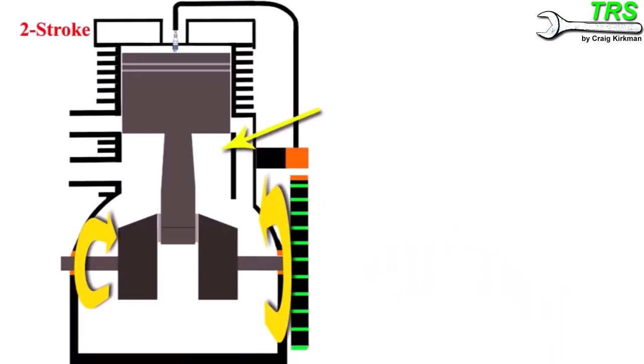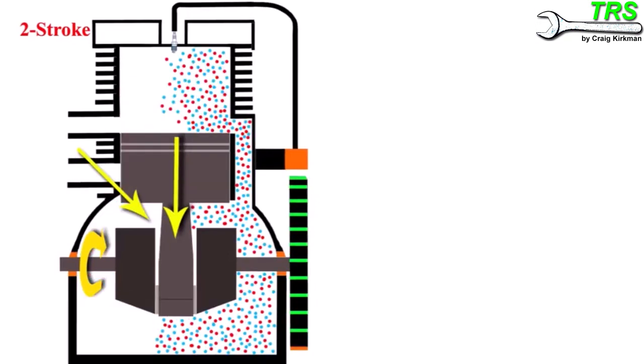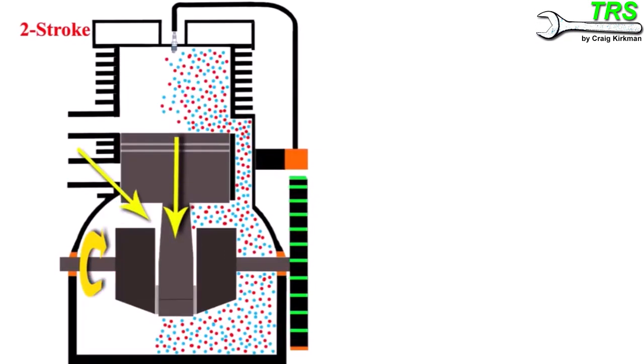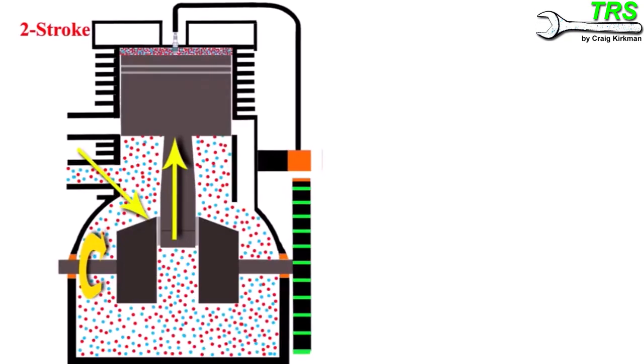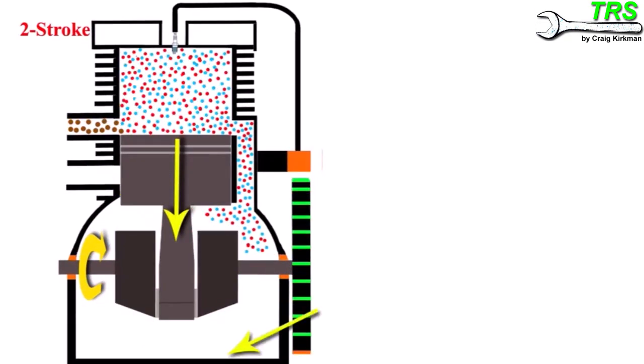We mix the two-stroke engine's lubricating oil with the fuel, either that or it's injected in a little later as it goes into the engine. But nevertheless, as the engine uses the fuel, it also draws all that lubrication in and it lubricates all the parts of the engine as it uses the fuel.